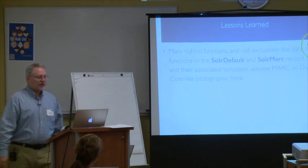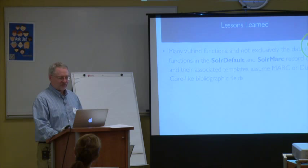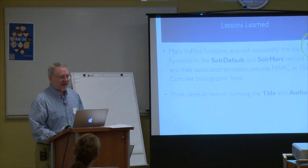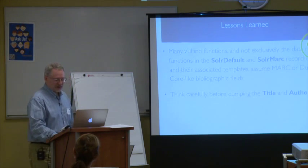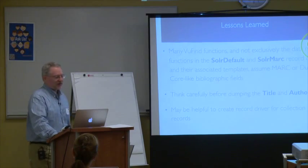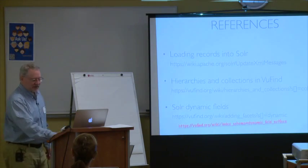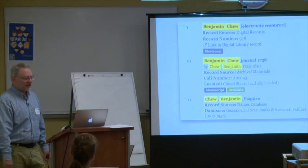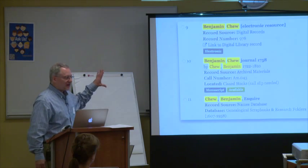Some of the lessons learned: many of the VuFind functions — particularly the Solr MARC and Solr default stuff and the associated templates — kind of assume MARC or Dublin Core-like bibliographic fields, and we have to work around some things, especially in our Discovery system where we're combining both MARC and non-MARC records. That can get a little bit awkward. You want to think carefully before dumping the title and author fields — they're really extensively used. And you should create a separate record driver for collections; it helps a lot to have that. These slides will be available later. This is key to what we can do with record drivers — this is a search result I've blown up a little bit.